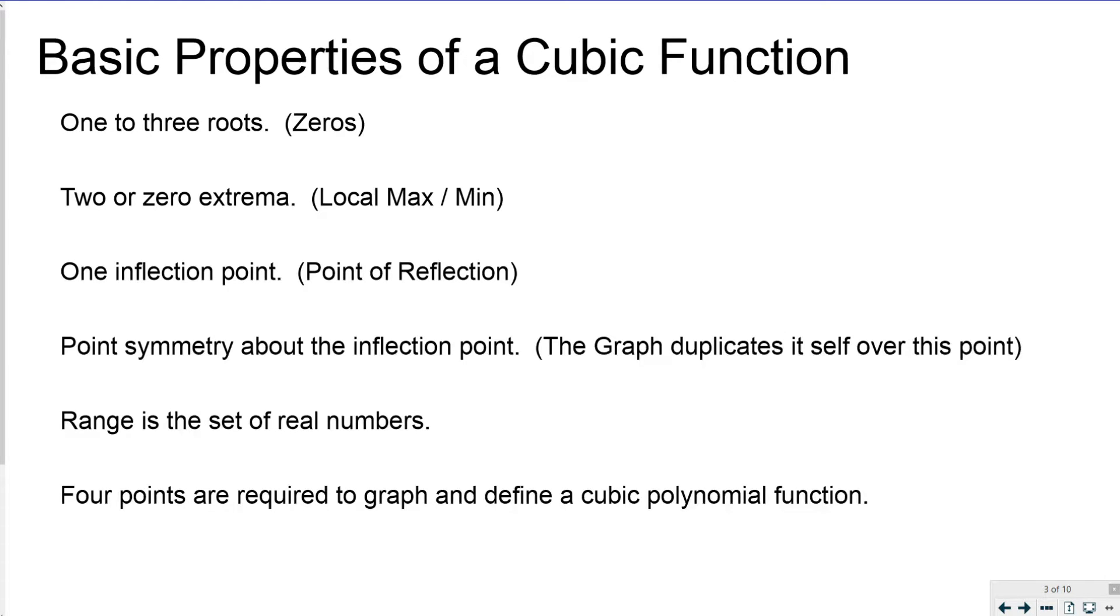The cubic function has 2 or 0 extrema, meaning local maximum or minimums. You'll see them as crests or valleys on the graph. It has 1 inflection point, a spot where the graph seems to turn around and then do exactly a mirror of what it was doing the other way.